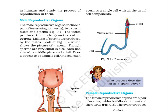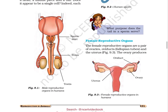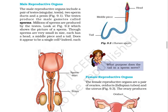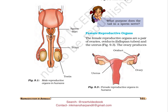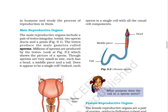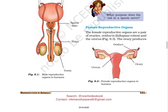The male reproductive organs include a pair of testes, two sperm ducts and a penis. Figure 9.1. The testes produce the male gametes called sperms. Millions of sperms are produced by the testes. Figure 9.2 shows the picture of a sperm. Though sperms are very small in size, each has a head, a middle piece and a tail. Each sperm is a single cell with all the usual cell components. Figure 9.1 depicts male reproductive organs in humans, showing the penis, testes and sperm duct. Figure 9.2 shows the human sperm with the tail, middle piece and head clearly visible.